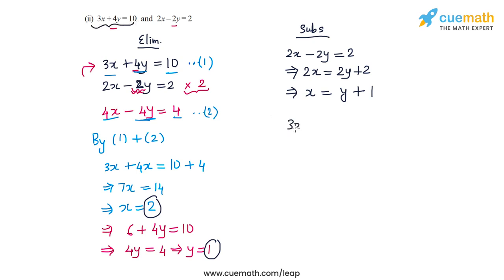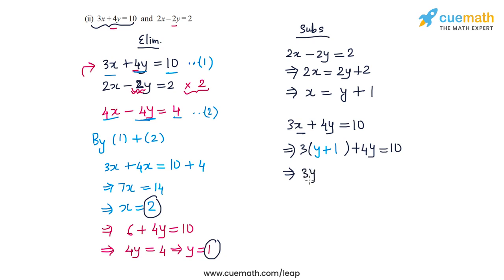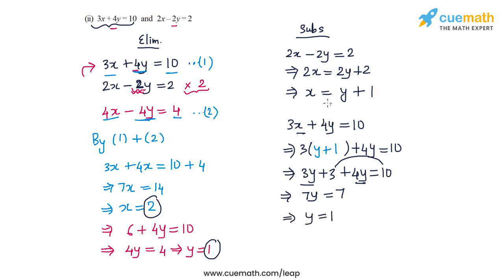The first equation is 3x plus 4y equal to 10. Substituting x equal to y plus 1: 3 times (y plus 1) plus 4y equal to 10. Expanding gives 3y plus 3 plus 4y equal to 10, so 7y equal to 7, or y equal to 1. Since x equal to y plus 1, we get x equal to 2. So once again we arrive at the same answer: x equal to 2 and y equal to 1, which is the solution to this pair of equations.